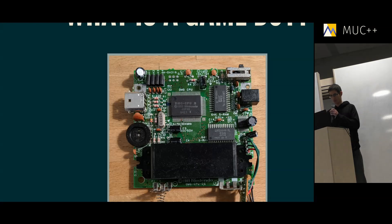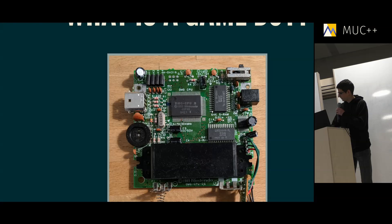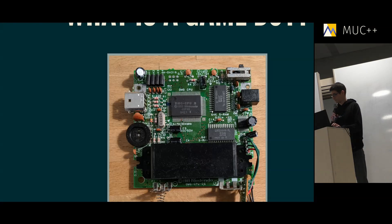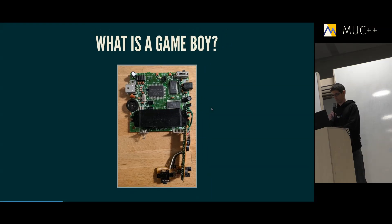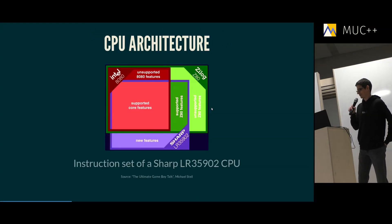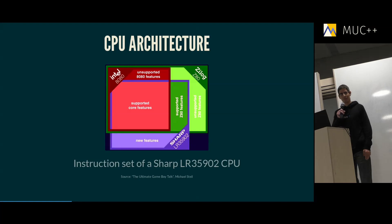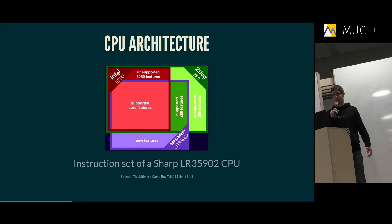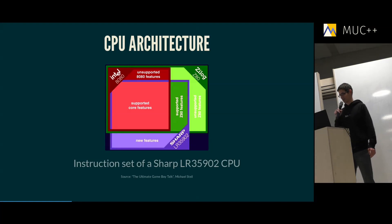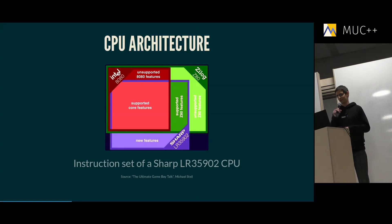If you open a Gameboy and look inside, the chip in the middle is the CPU; the other two chips are RAM and video RAM. The CPU architecture is quite interesting — it supports most of the instructions of an Intel 8080 CPU but not all of them. It also supports most of the instructions of the Zilog Z80 CPU, which is a strict superset of the Intel CPU, but again not all of them.